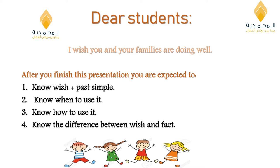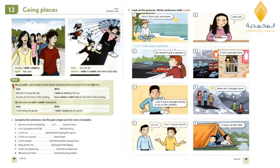Dear students, move to your grammar book page 86, unit 12: 'Going Places.' There you can find two pictures — a group of students playing in a park. Let us read the conversation: Maddie: 'I wish I could fly.' Ryan: 'You can.' Beth: 'We can fly.' Martin: 'I wish we could come here every day.' So it seems like they are enjoying their time in the park.